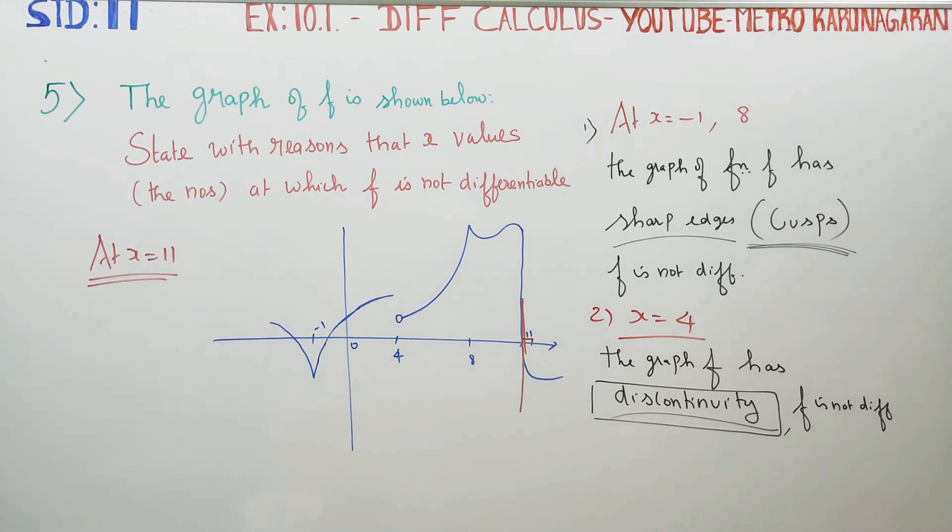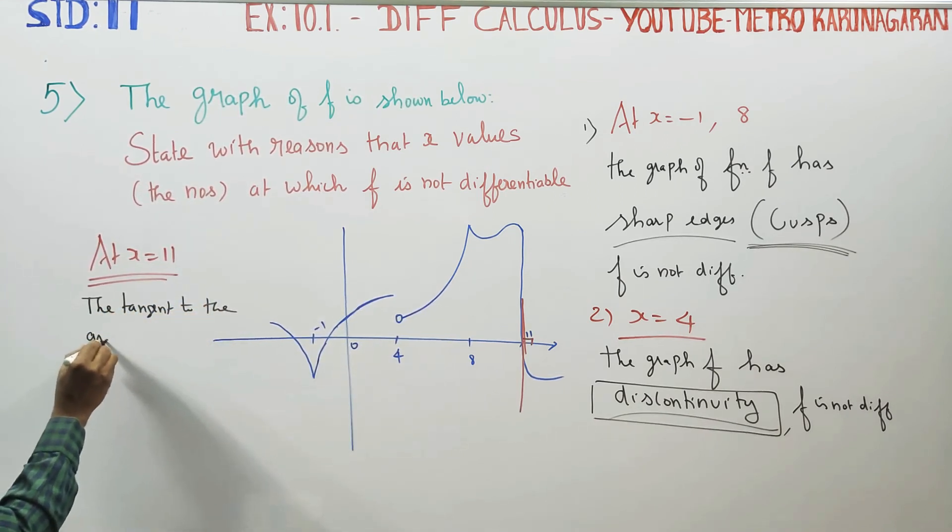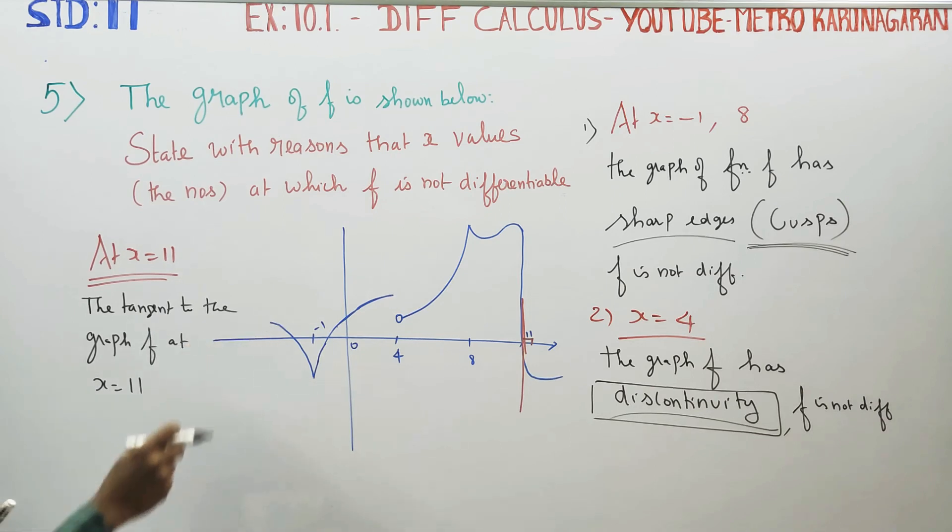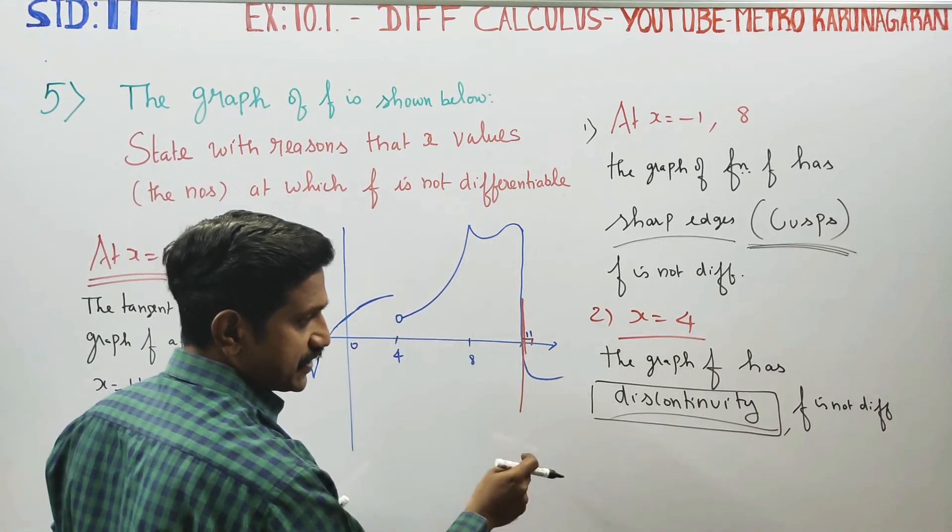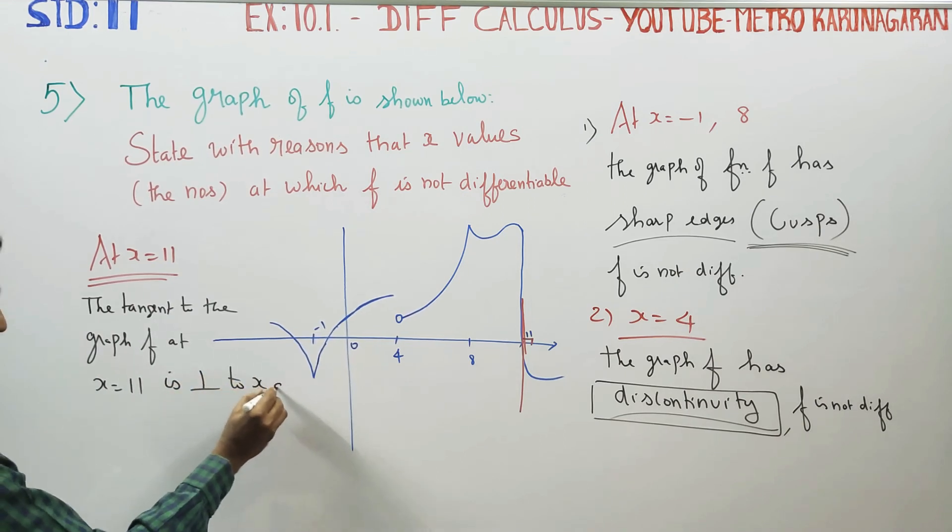At x equals 11, the tangent to the graph F at x equals 11 is perpendicular to the x-axis.